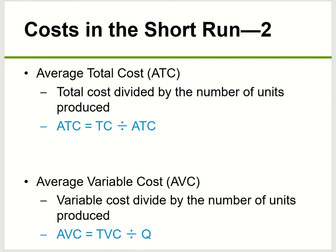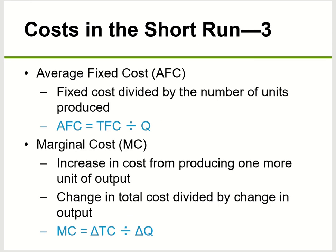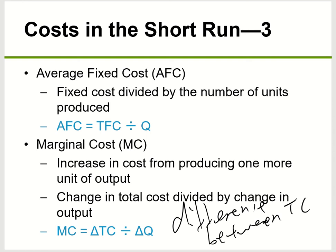Also know your average total cost: that's your total cost divided by quantity. Your average variable cost is your total variable cost over quantity. Average fixed cost is your fixed cost over quantity. And marginal cost is your change in total cost over change in quantity. The simplest way to find marginal cost is to find the difference between each level of total cost — that's your marginal cost.